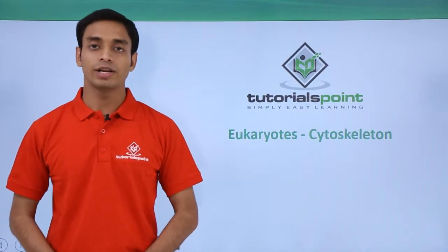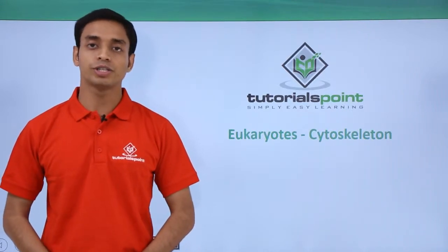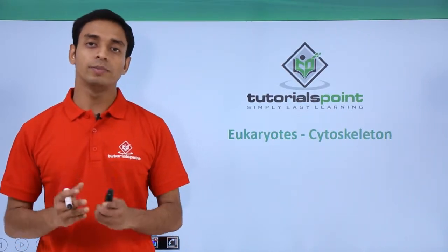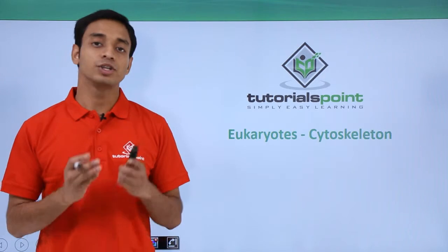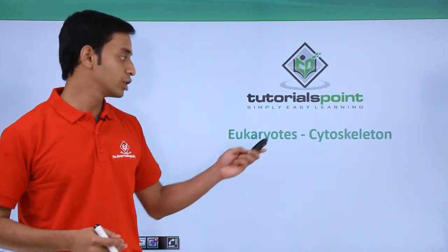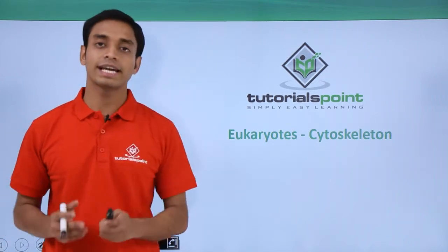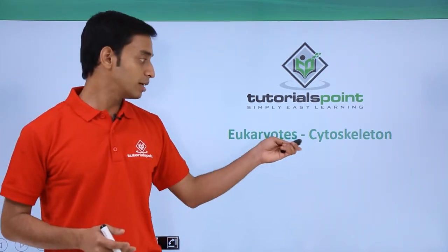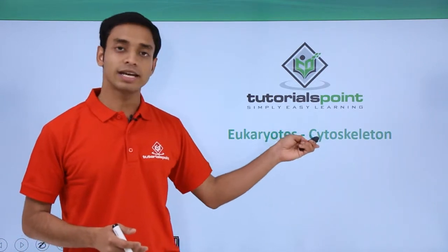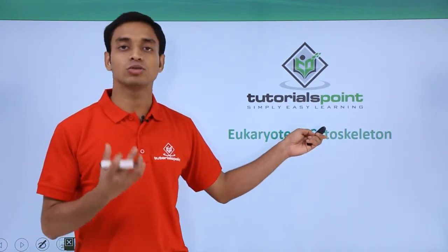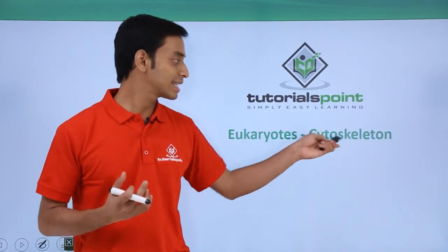Hello everyone, welcome to Tutorials Point. In this video we will be talking about a eukaryotic cell structure known as the cytoskeleton. From the name we can understand: 'cyto' is something related to cytoplasm, and 'skeleton' may be providing a shape or structure to the cells.